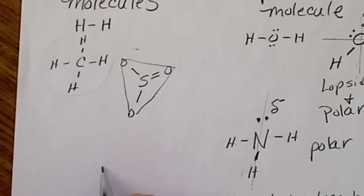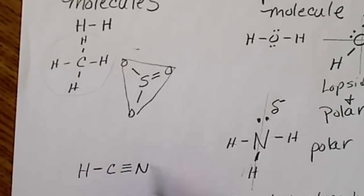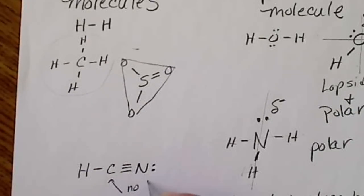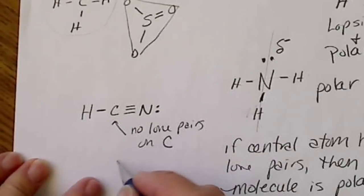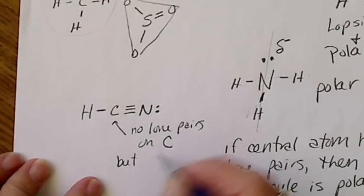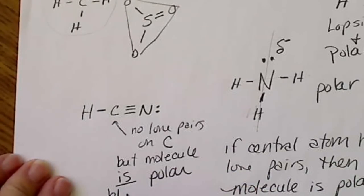We may have something like this. We drew a dot structure for this. There are no lone pairs on carbon, but the molecule should look lopsided to us. The molecule is polar because it's lopsided.